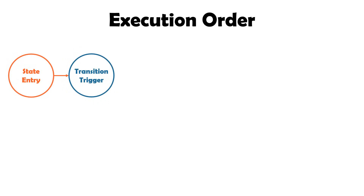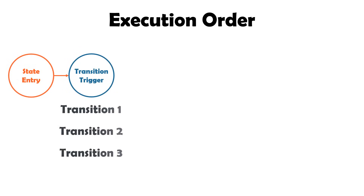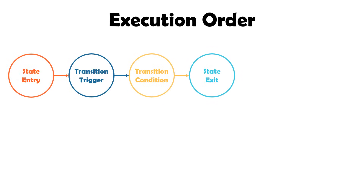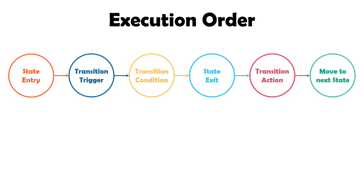Let me summarize the execution order of all sectors. First the entry sector activities are executed. After that we go to the transitions — all trigger sector activities are executed in reverse order (last transition first, first transition last). Then the conditions are checked depending on the entry and trigger activities, and a transition is selected. We go back to the state and the exit sector activities are executed. Finally, the action sector activities of the selected transition are executed, and we move to the next state.